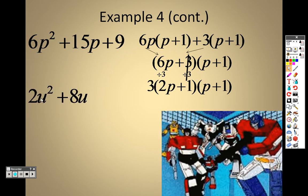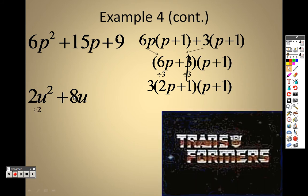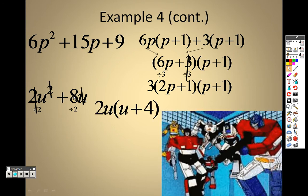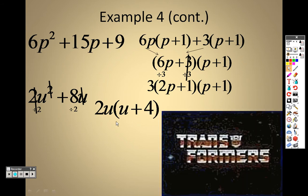Take a look at this one. I can take a 2 out of both of those, and I can also take a u out of both of those. We divide each of those by 2 and a u, I end up with 2u and u plus 4 as well. And u plus 4 is as simple as I can make it.